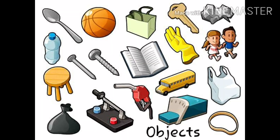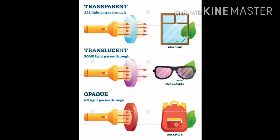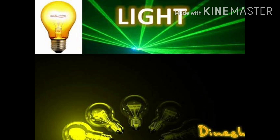Objects are things that we see or use in day to day life. Objects are 3 types: transparent, translucent, and opaque. Reflection of light — reflection is when light bounces off an object.